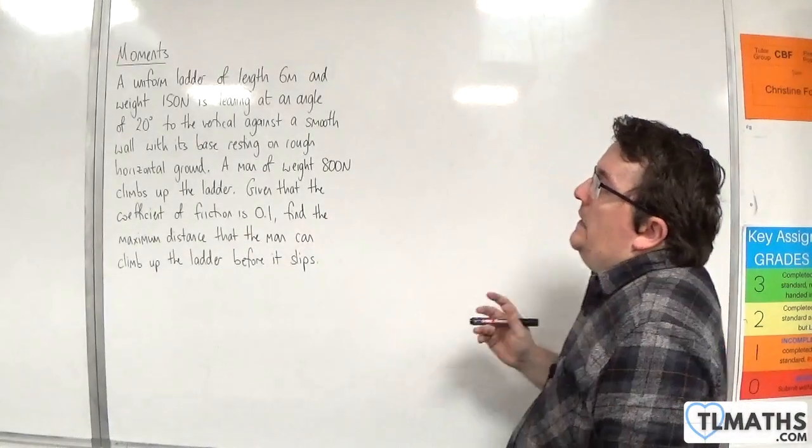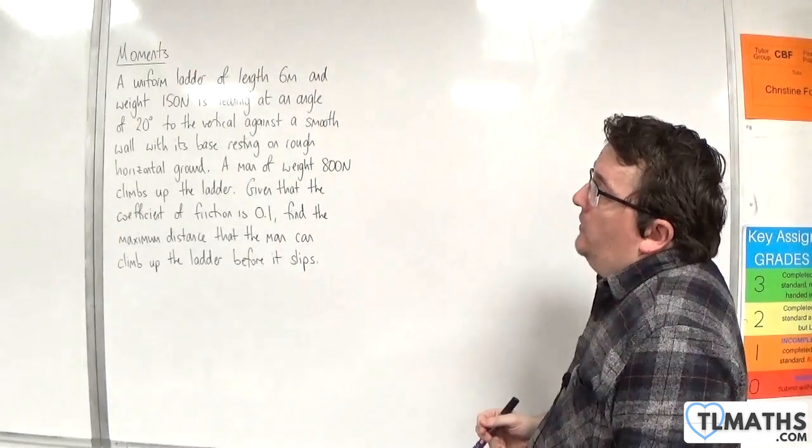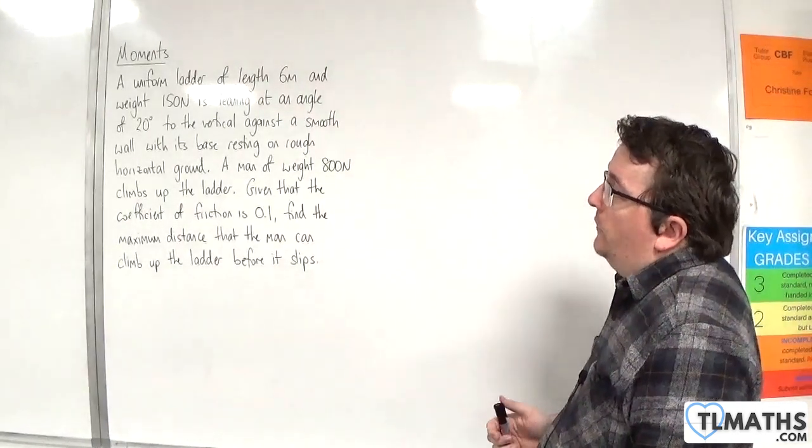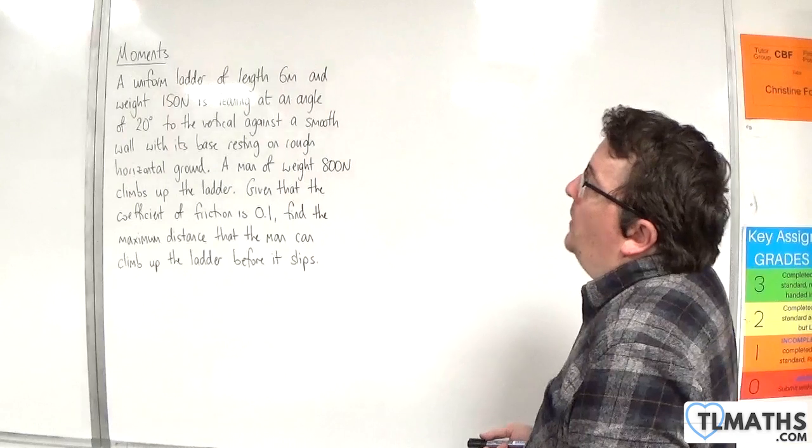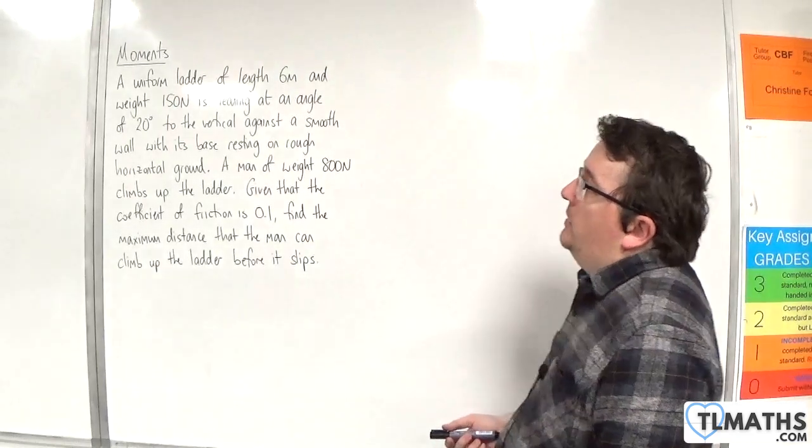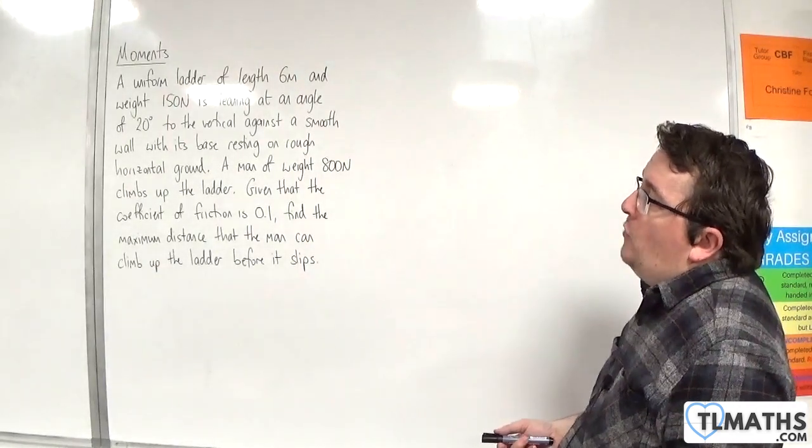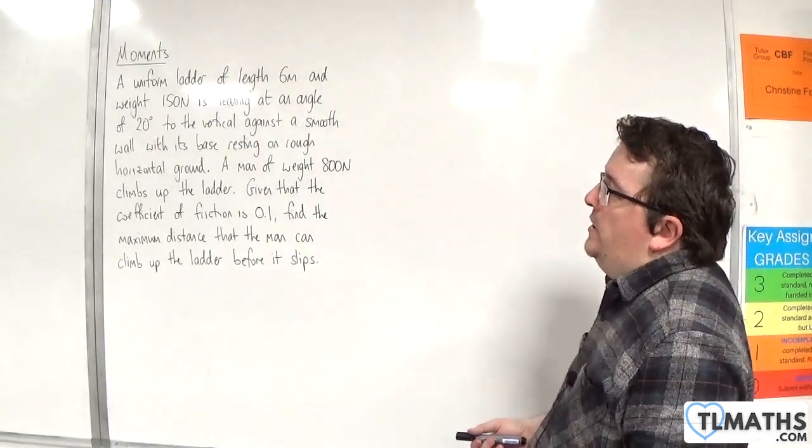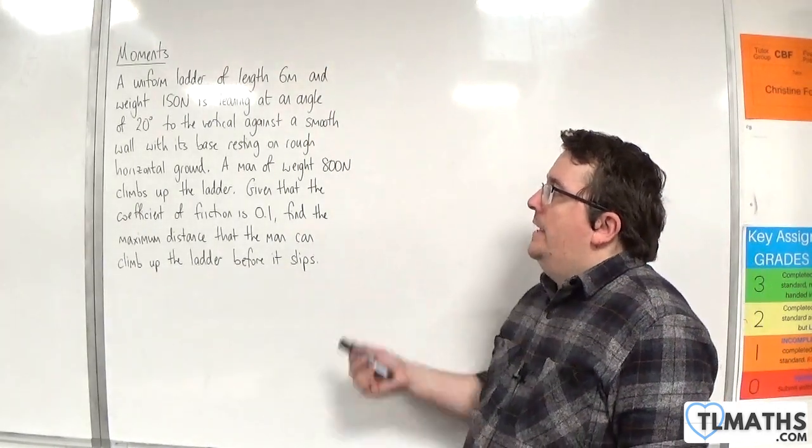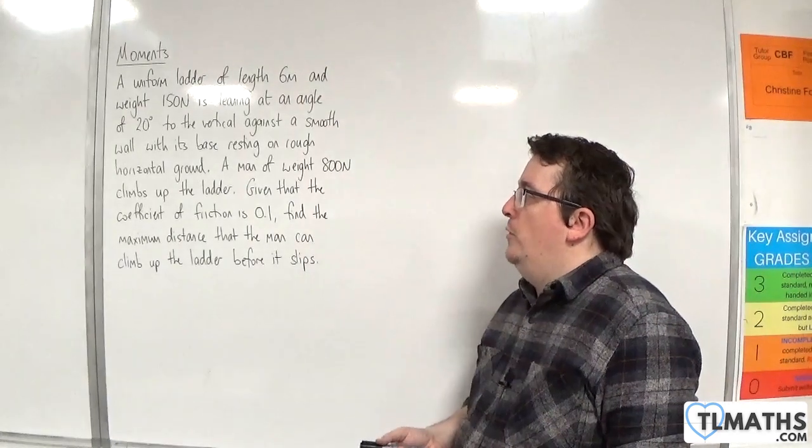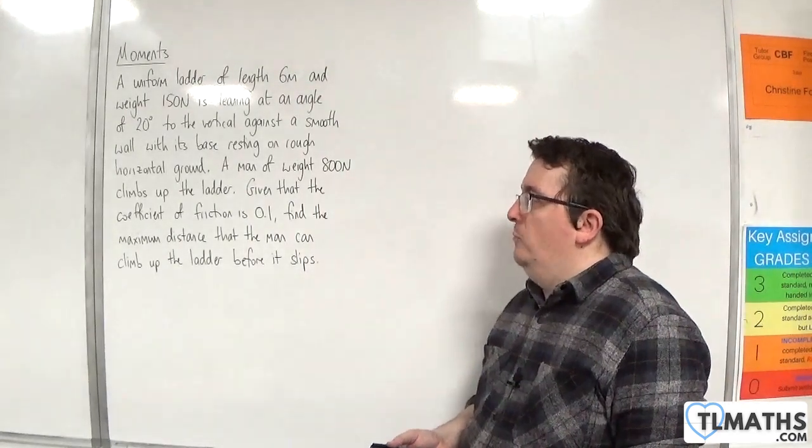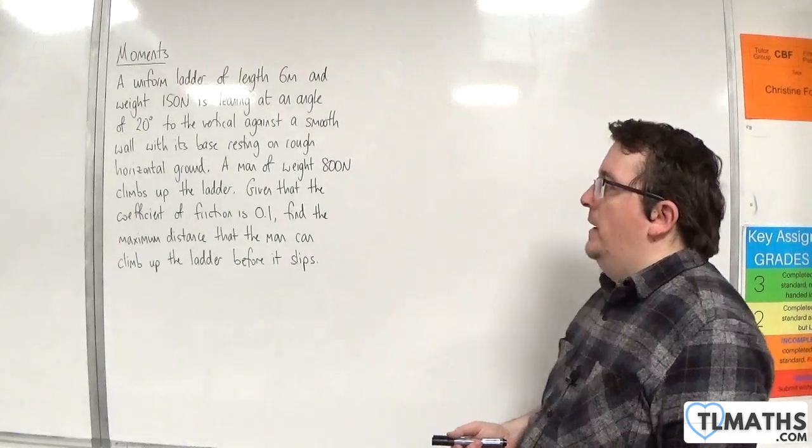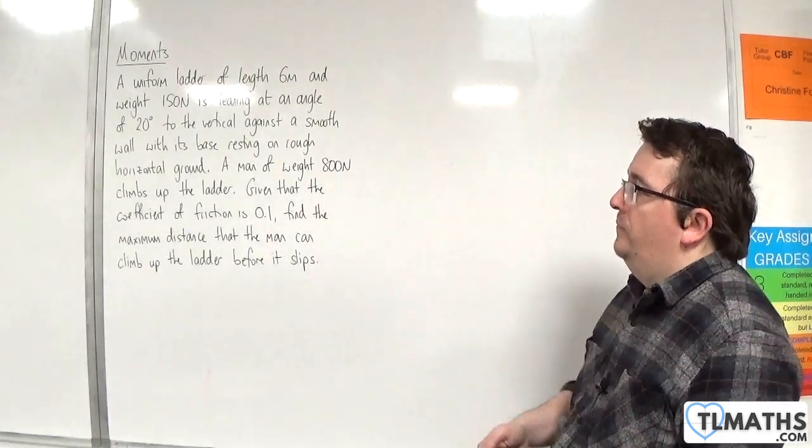In this example, a uniform ladder of length 6 meters and weight 150 newtons is leaning at an angle of 20 degrees to the vertical against a smooth wall with its base resting on rough horizontal ground. A man of weight 800 newtons climbs up the ladder. Given that the coefficient of friction is 0.1, find the maximum distance that the man can climb up the ladder before it slips.